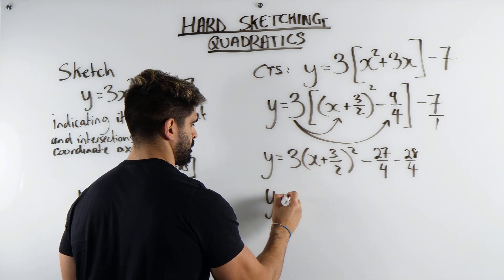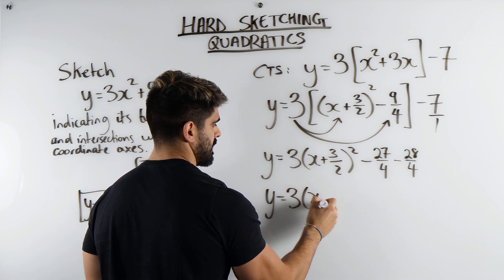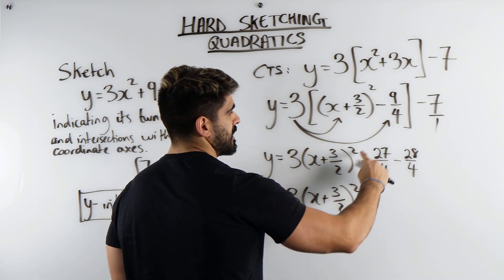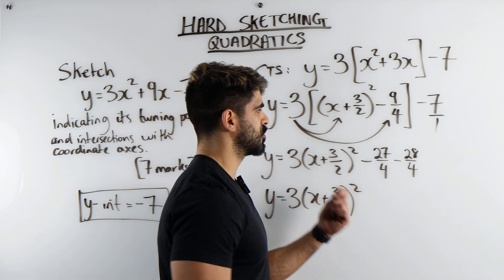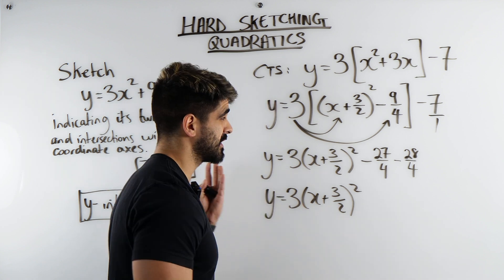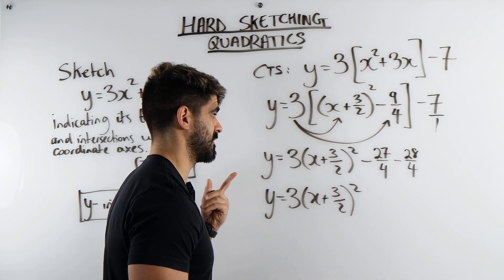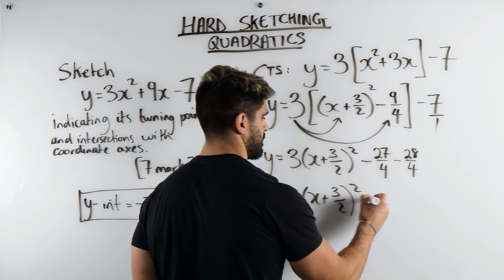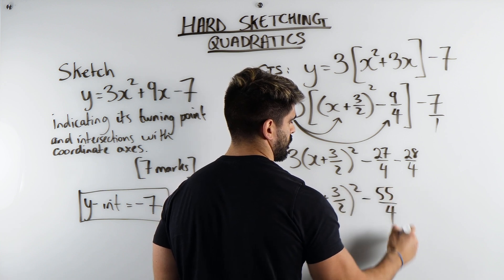So, simplifying that, we get y = 3(x + 3/2)² - 27/4 - 28/4. You have to do -27 minus 28. You could just do 27 plus 28 and then just make it negative, which would be what? 55, right? Yes. So, -55/4.